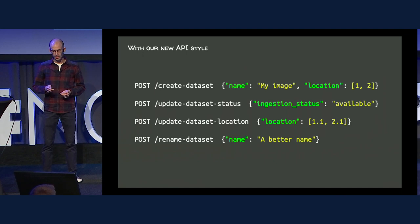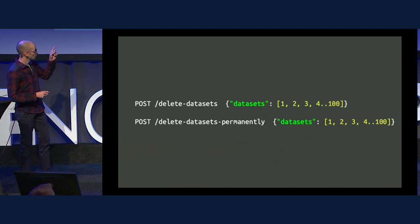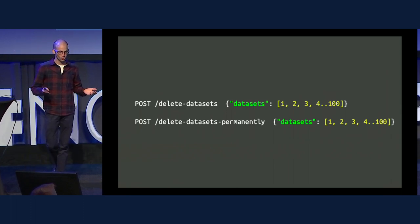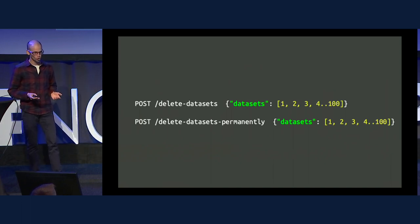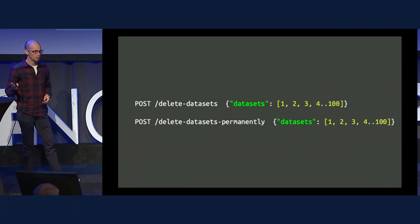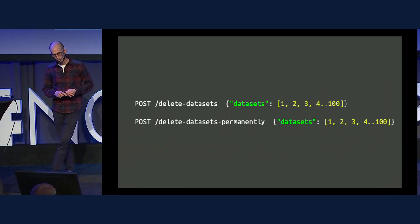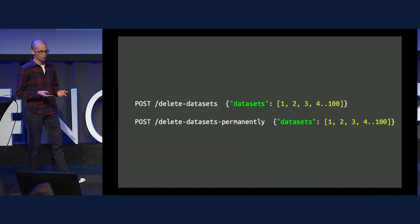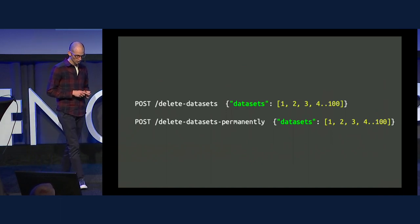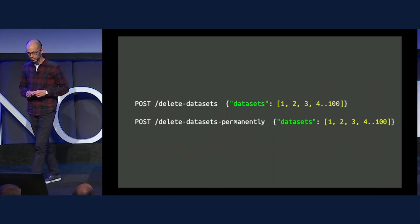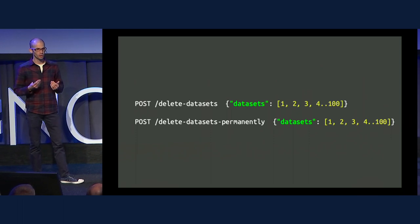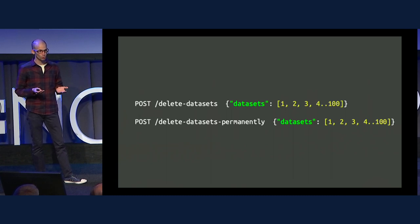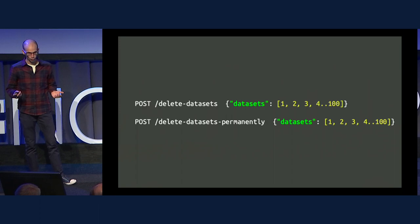What does it look like for the deletion problem? Two operations, two endpoints. For the delete datasets endpoint, we can handle batch deletion — much more efficient, one single request instead of several. And about the problem of methods: we use POST. We have a dedicated endpoint for 'delete dataset permanently' for the internal process. Something worth mentioning: since it's a dedicated endpoint, we don't even have to expose it to the public API. That's even better.